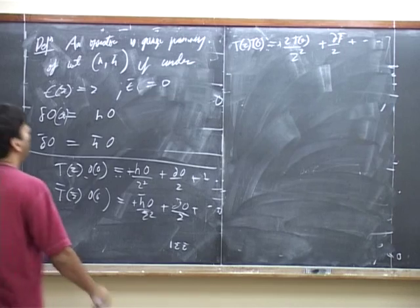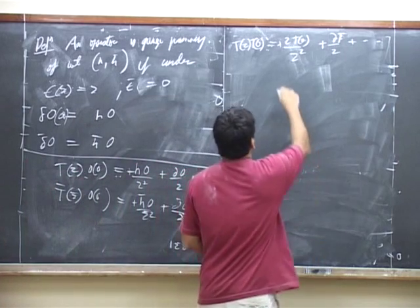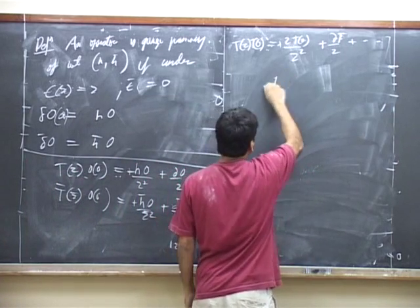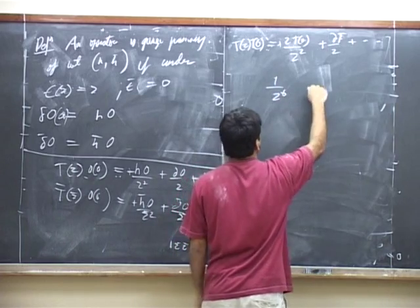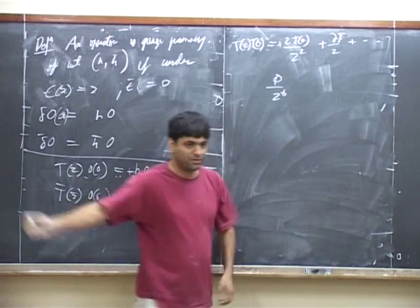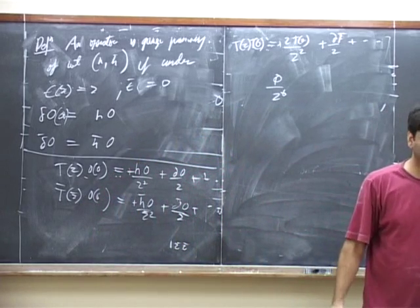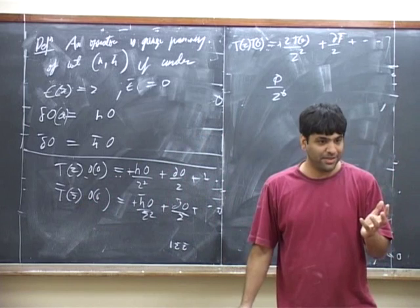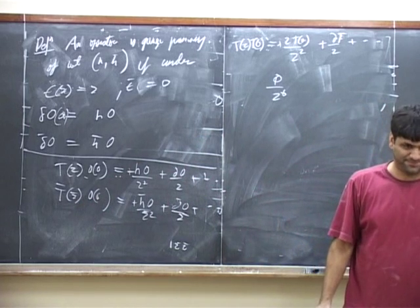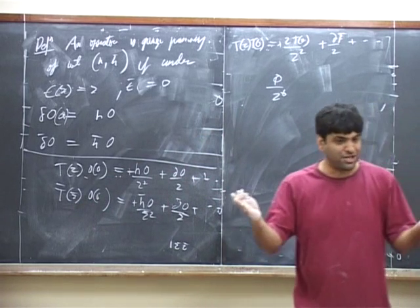The first question I ask is could you have something like, for instance, 1 over z to the 6 times something? But if you had something like 1 over z to the 6 times something, it would have to be an operator of negative dimension so that net dimension adds up to 4.